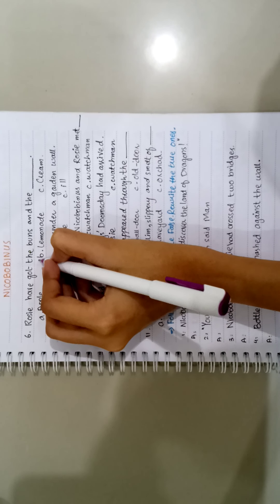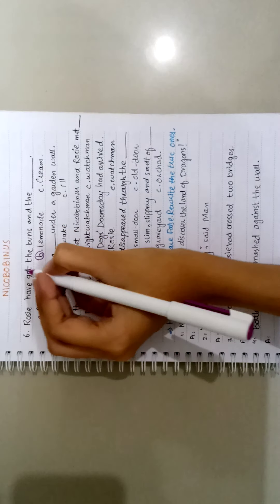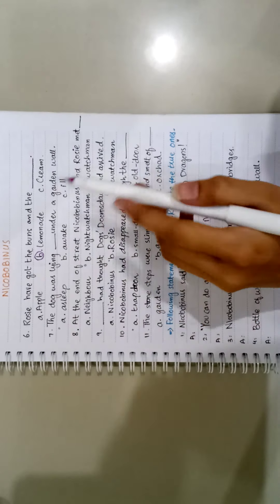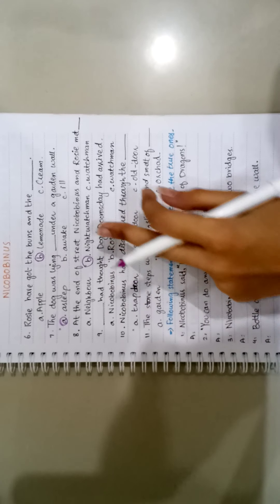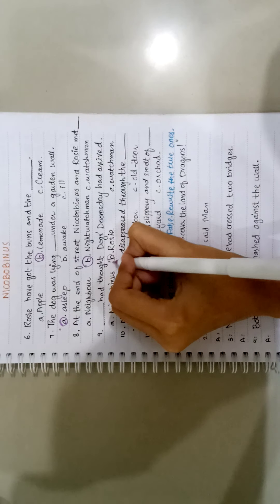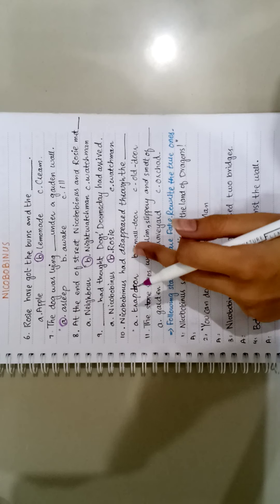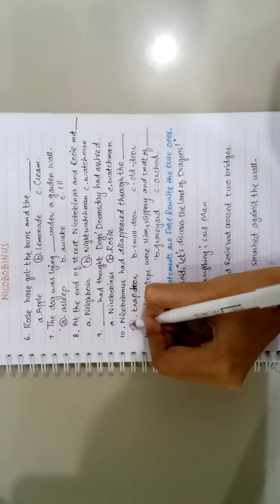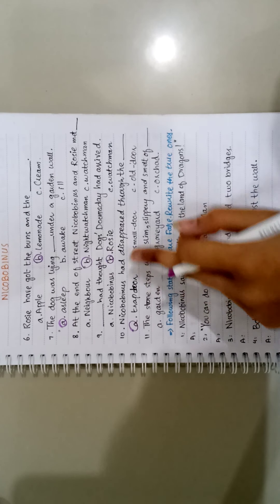MCQ number 6: Rosie has got the buns and the dash: lemonade. Seven, the dog was lying dash under a garden wall: asleep, awake, ill. Asleep. Eight, at the end of street Nicobobinus and Rosie met neighbor, night watchman. Night watchman.